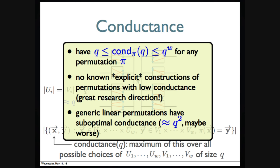It's easy to show that conductance is lower bounded by Q and upper bounded by Q^W. If you choose a random permutation, its conductance would be very close to Q, which is optimal. But we don't know any explicit construction for a permutation with low conductance. So that will be an open problem. If you want to have a linear diffusion permutation, we conjecture there exists a linear permutation with conductance Q², but just a conjecture.